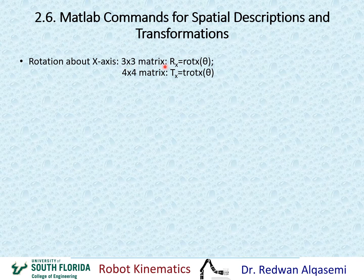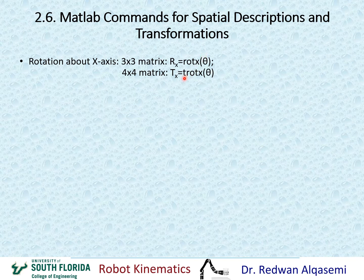If you want this represented as a 4x4 transformation matrix, then you can use trotx of theta, and that will give you a 4x4 transformation matrix where the rotation portion is the rotation about the x-axis by the amount of theta, and the translation portion will be 0, 0, and 0.